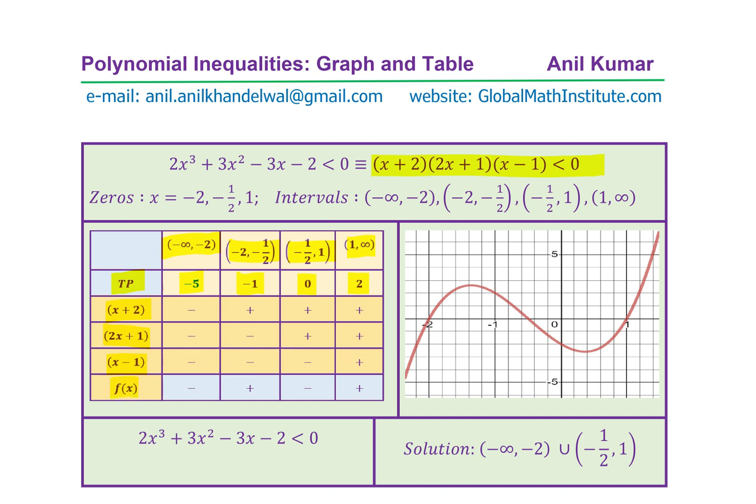The function f(x) is the product of all these three factors. So when you multiply three negatives, you get a negative. When you multiply positive with two negatives, you get a positive. Even number of negatives will give you a positive. That's what we have to see. And therefore, we get the sign of the function itself.